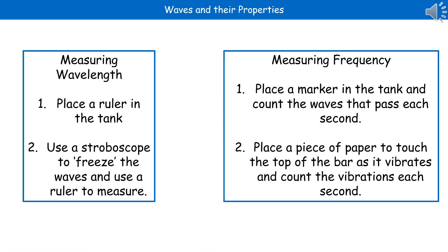When it comes to measuring waves, we usually use a ripple tank. To measure wavelength, you can either put a ruler in the tank and use it by sight, or use a stroboscope to freeze the waves and use a ruler to measure them. To measure frequency, you can either place a marker in the tank and count the waves that pass each second, or place a piece of paper just touching the top of the bar — as it vibrates, you'll get a sound which you can count each second.